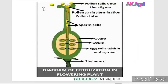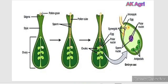Once the pollen grains come in contact with the receptive stigma, the pollen grain germinates and it produces a pollen tube all along the style. Also, this pollen grain releases two sperm cells in the pollen tube. Once this pollen grain comes in contact with the stigma, it produces a pollen tube and also releases two sperm cells.